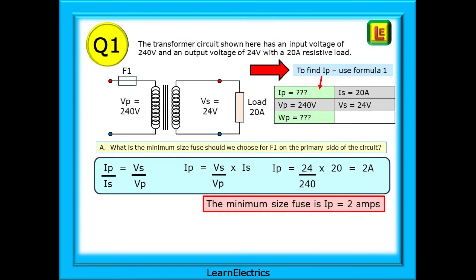Here's the calculation for part A. The minimum fuse size will be the current flown through the primary side or IP. We know both voltages VP and VS and we know the secondary current IS. By rearranging formula number one we have IP is equal to VS over VP and then multiplied by IS. Inserting numbers into the equation we have an answer of 2 amps for IP.